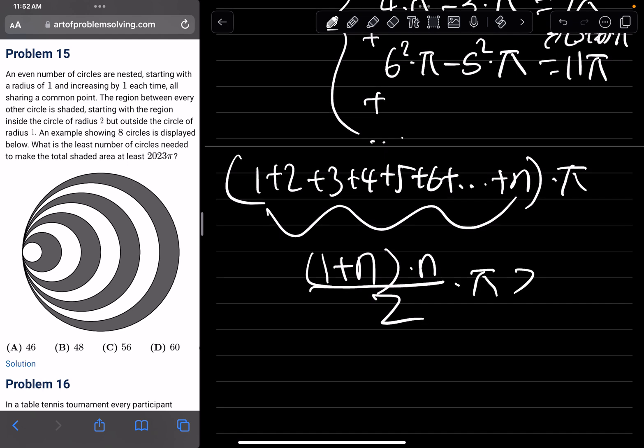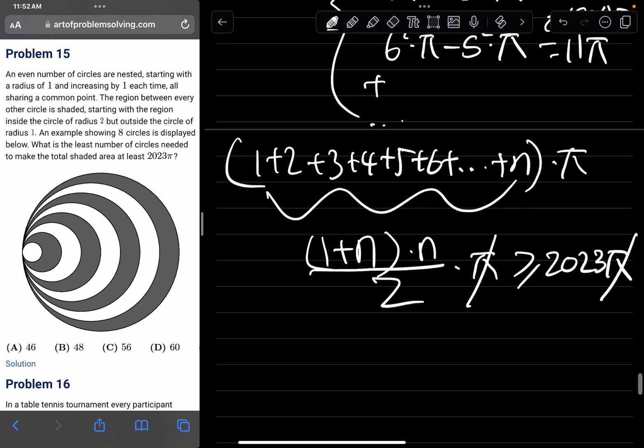And this times π has to be greater than or equal to 2023π. So π and π cancels. So we could rewrite this as n times n+1 has to be greater than or equal to 4046.